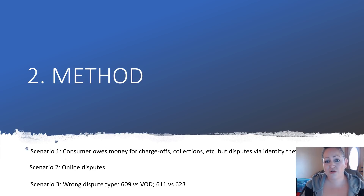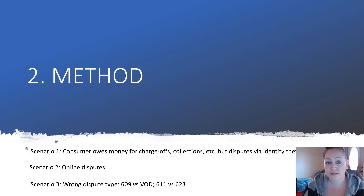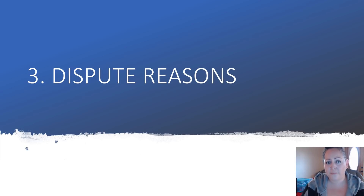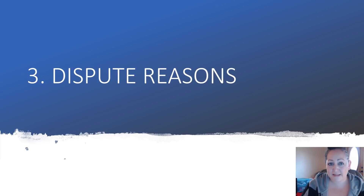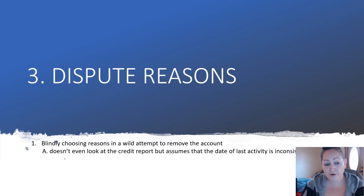Wrong dispute type: 609 versus VOD, 611 versus 623 — you need to make sure you understand what these things are actually for and how to use them before you just go and send a dispute letter.